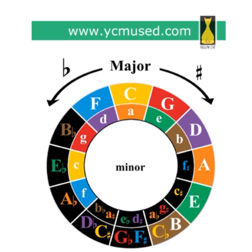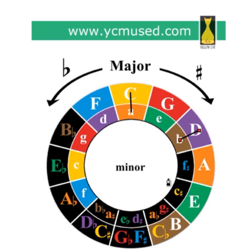If we look at the circle and start at the minor, we can show minor thirds. For example, A to C is a minor third. B to D is a minor third. When going from the inner ring to the outer ring, G sharp to B sharp, for example, we show minor thirds.